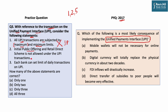Statement 2 says initial public offerings (stock market investment) and the Retail Direct Scheme are not allowed under UPI. This statement is incorrect — up to Rs. 5 lakh can be invested using UPI in these two programs. Statement 3 says each bank can set its own limit of daily transactions on UPI. This is absolutely correct — SBI, Bank of Baroda, ICICI Bank can each set their own transaction limits for UPI. The answer to this question is option A, and UPSC's answer on UPI was that mobile wallets will not be necessary for online payment — also option A.